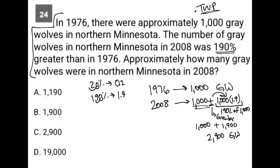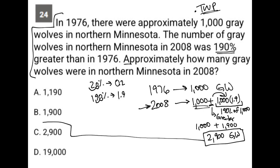Here's the beauty of this strategy: I haven't finished reading the question, but I take each sentence and work with the information to figure out exactly what it means. So I know that the 2008 value was 2,900 gray wolves. The next sentence asks: approximately how many gray wolves were in northern Minnesota in 2008? I already did the math for that — I already know it's 2,900. Therefore, the answer is choice C.